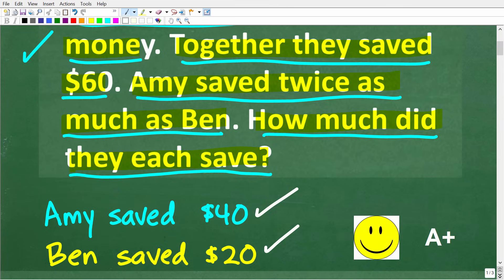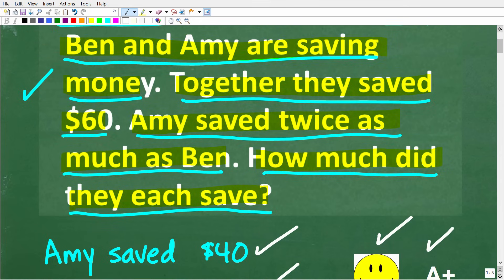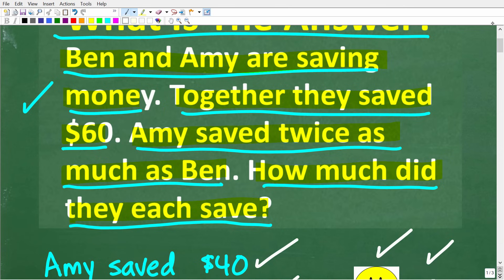The correct solution here is Amy saved $40 and Ben saved $20. Now if you got this right, you definitely get a happy face and an A+. Now if you didn't get this right, I'm going to be using algebra to solve this problem. But this is actually a pretty easy problem to kind of play around and figure out. So if you got this right and you did not use algebra, that is fantastic.